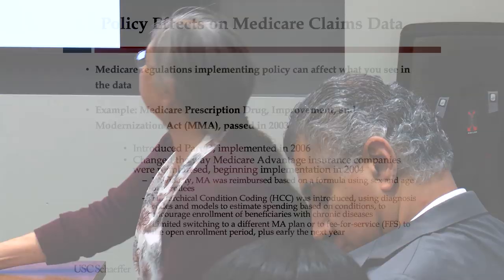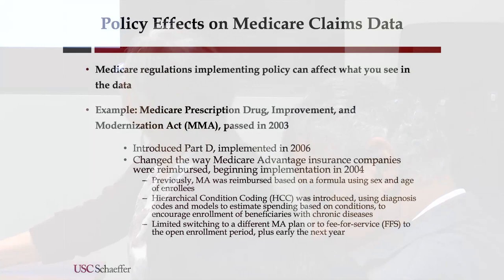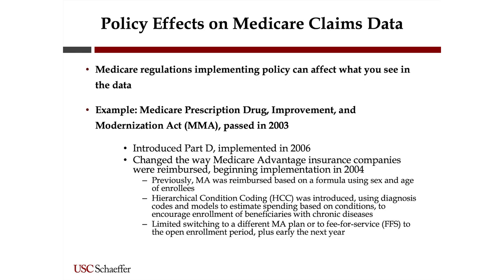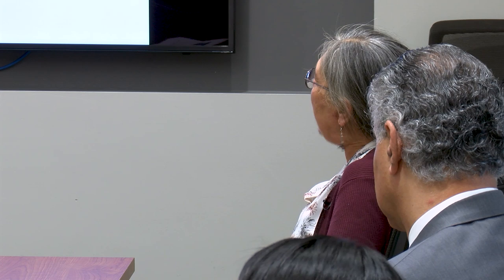There are also things you need to be aware of when there are policy changes. Medicare regulations implementing policy can affect what you see in the data. One example is the Medicare Prescription Drug Improvement and Modernization Act (MMA), passed in 2003 by Congress, which introduced Part D, finally implemented in 2006.